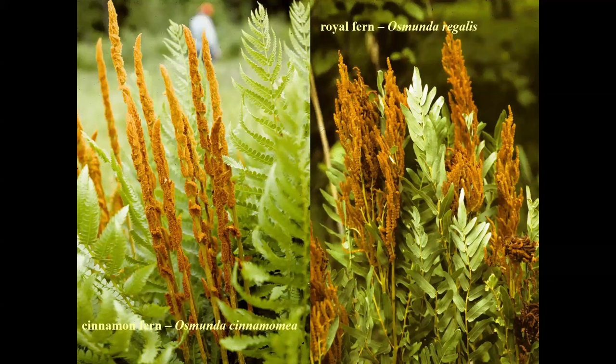Osmunda cinnamomea is now Osmundastrum. All the nomenclature and ranges you can find on the New York Flora Atlas — I probably spend more time on that site than any other during the course of a week. For every native or naturalized species, it shows the counties in which it's been documented and has the updated nomenclature. Our royal fern is still Osmunda regalis.